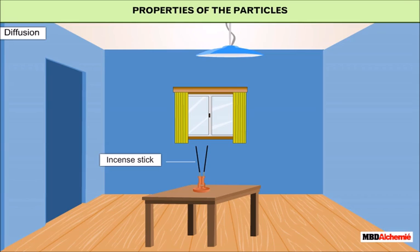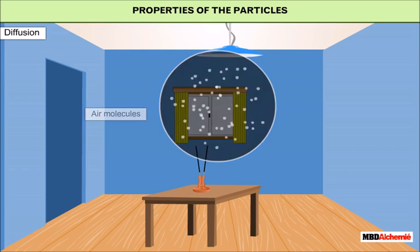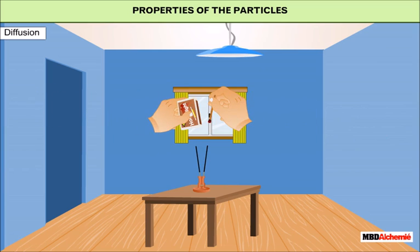Diffusion. Let us observe what happens when we light an incense stick in the room. Take an unlit incense stick in a room. When we light the incense stick, its particles mix with the particles of air around it and spread out.